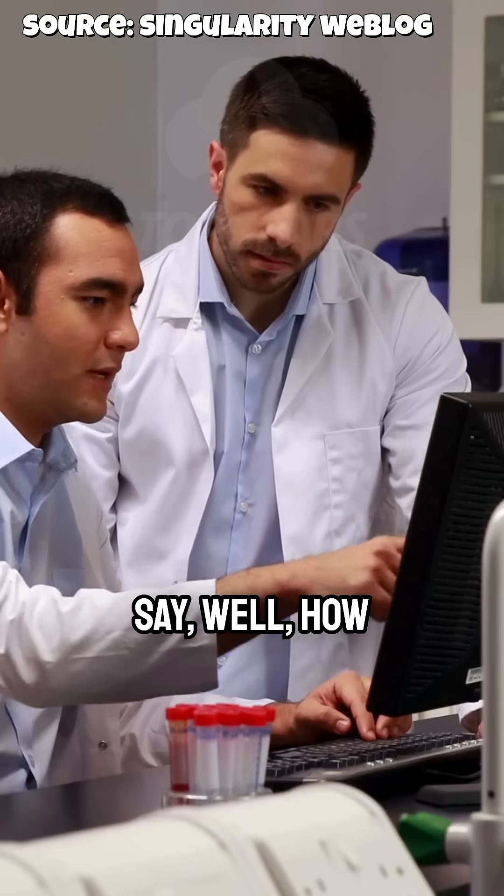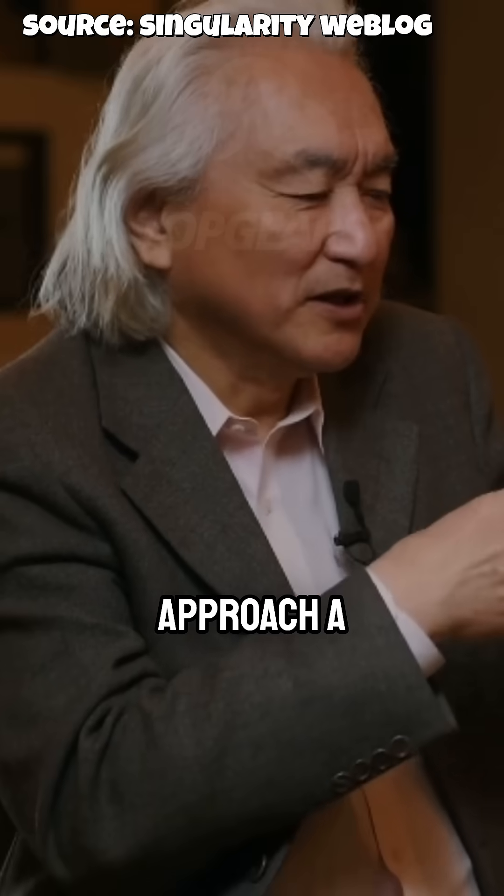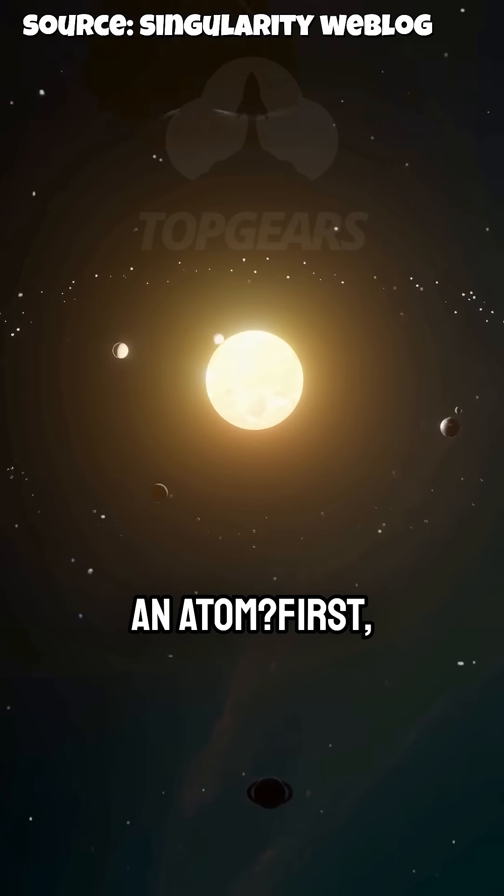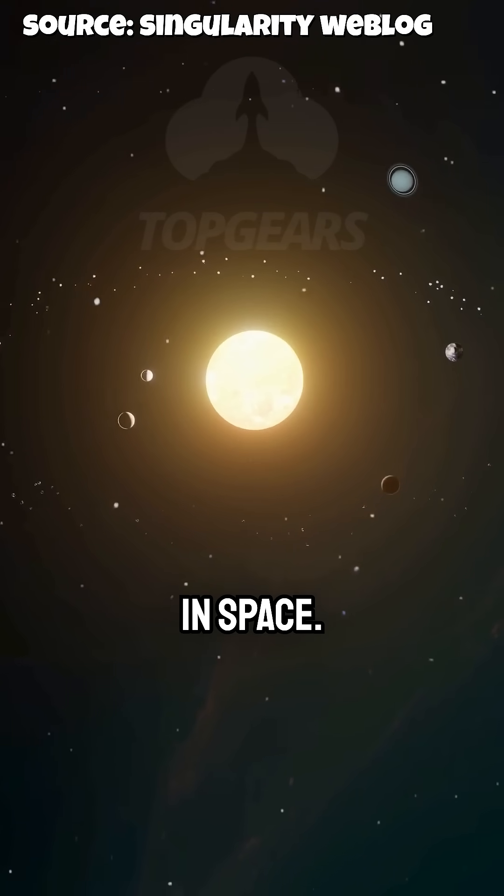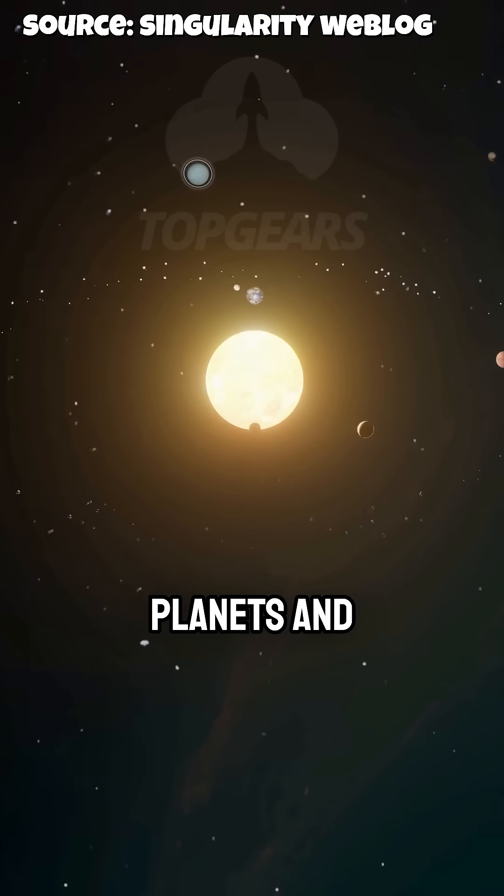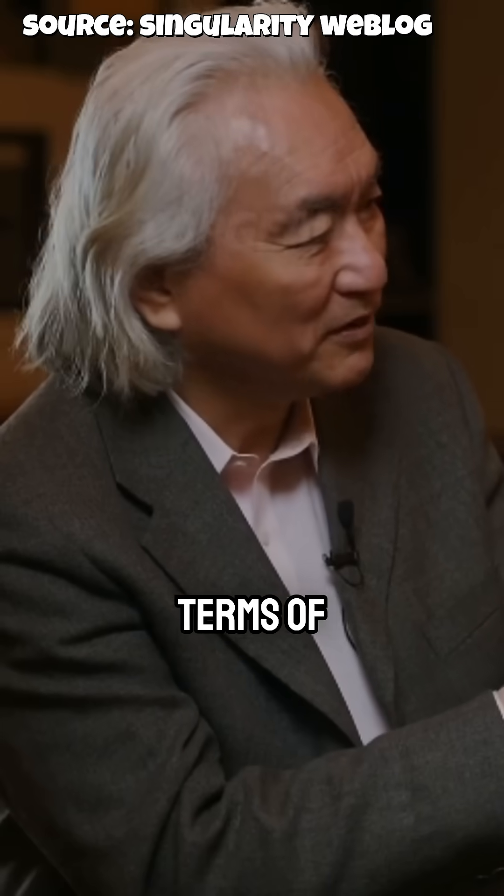And so being a physicist, I say, well, how would a physicist approach a solar system, an atom? First, we describe the electron in space. That's the first thing we do, try to understand planets and motions in terms of space.